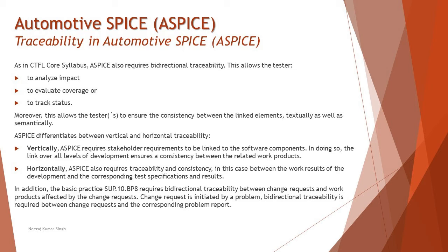Next we have traceability in Automotive SPICE. Just like conventional applications and traditional approaches, traceability is done at every point and is crucial to ensure everything is related. As discussed in the CTFL foundation syllabus, ASPICE also requires bi-directional traceability. This allows the tester to analyze impact — similar to regression and maintenance testing — to evaluate coverage and track status: how many test cases are prepared per requirement and how many are executed so far. This ensures consistency between linked elements both textually and semantically.